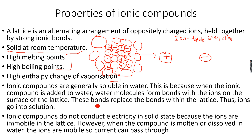Ionic compounds are generally very soluble in water. Now ionic compounds do not conduct electricity in solid state. This is because in solid state, ionic compounds have a lattice structure — a very orderly, very packed structure. So these ions, even though they are charged, they cannot move.